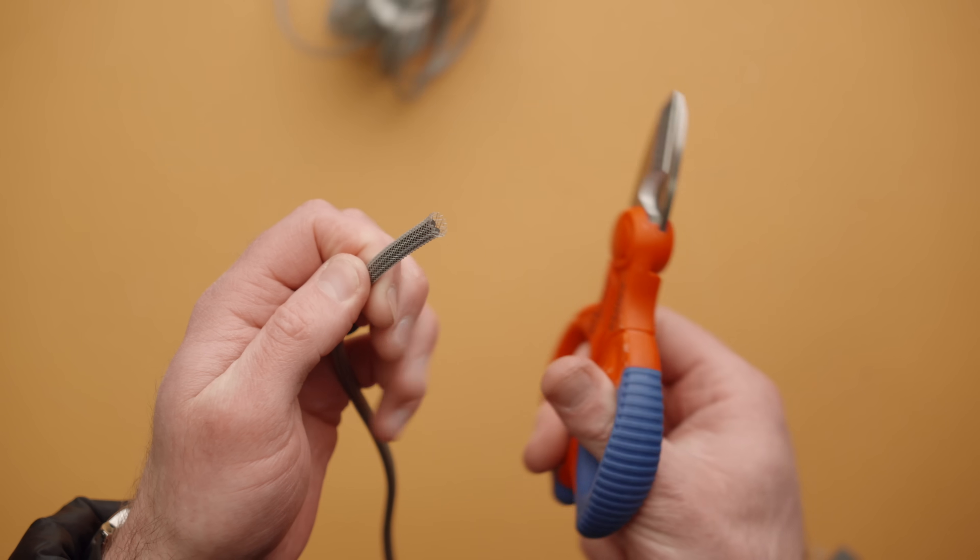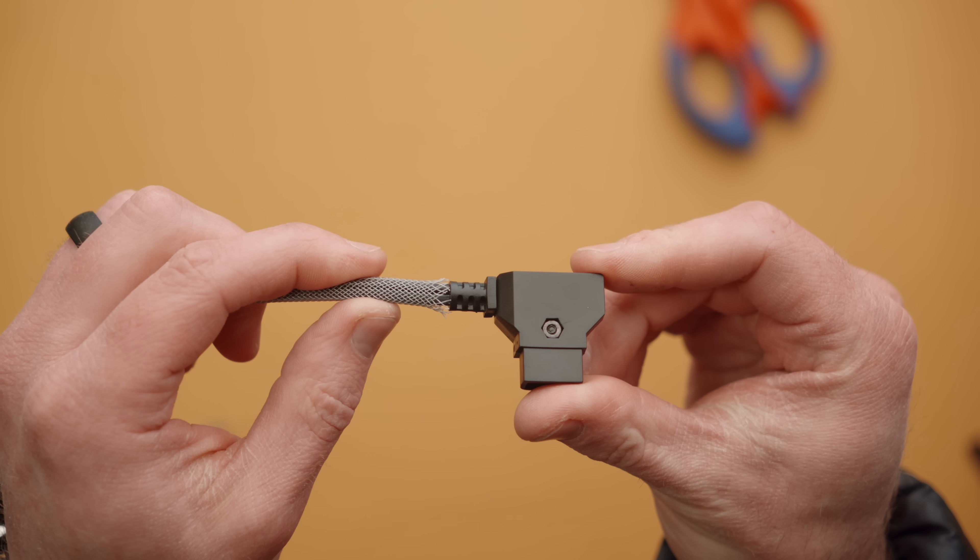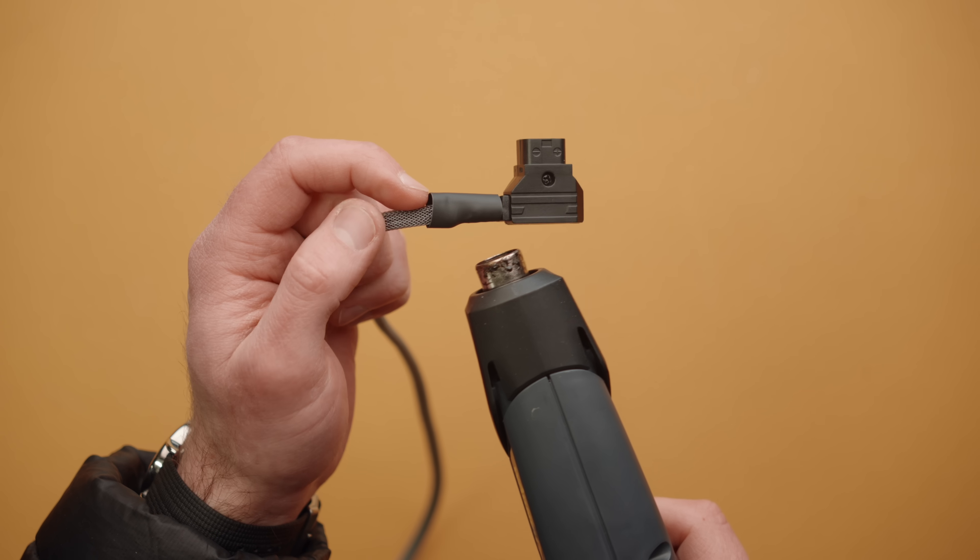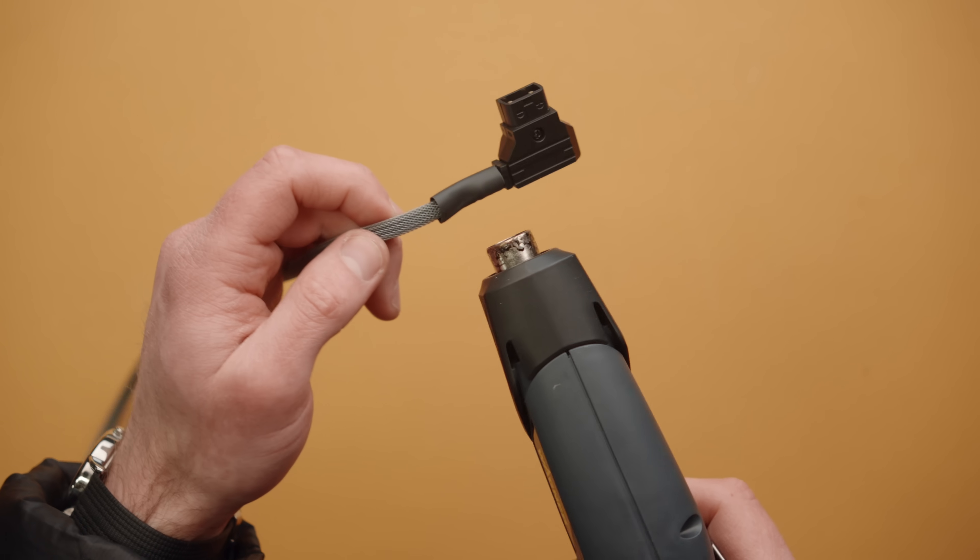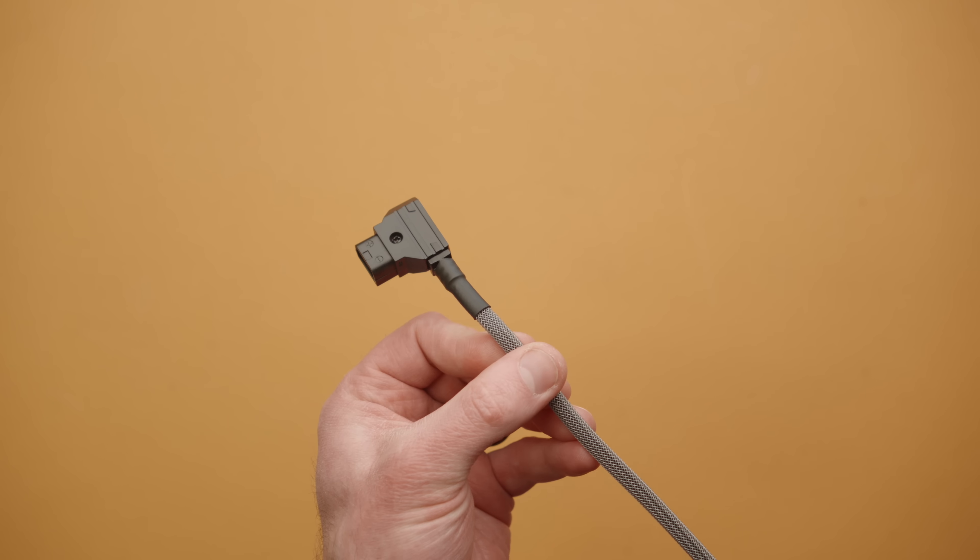I'm going to cut off the excess. I would recommend giving yourself a little more than I did here. Then on the D-tap end, I'm going to clean up using a pair of scissors, then cut some shrink tubing and run it over the end of the cable and clean up that D-tap end. Once I heat it up, you get a really nice clean D-tap connector on one end.